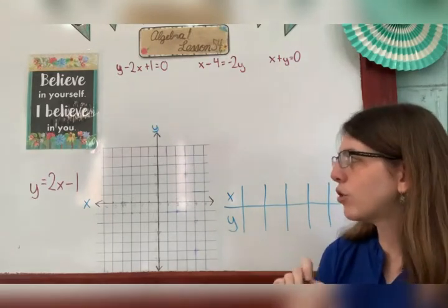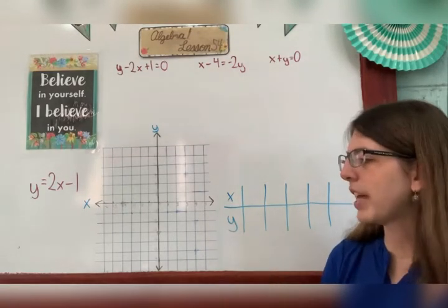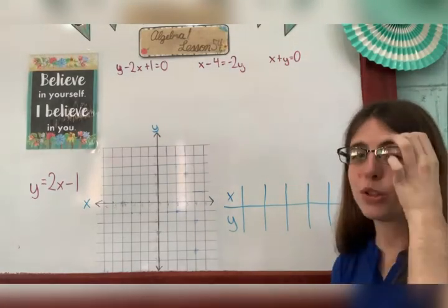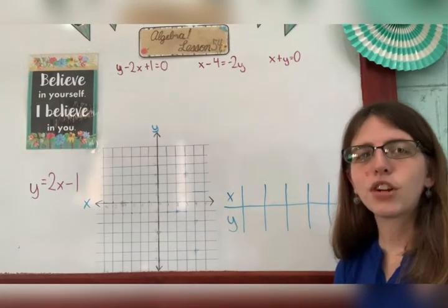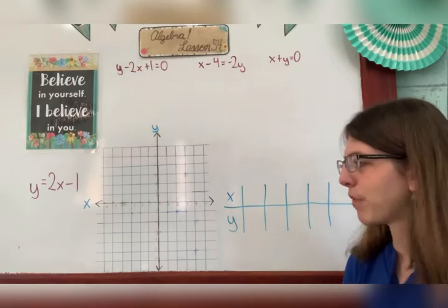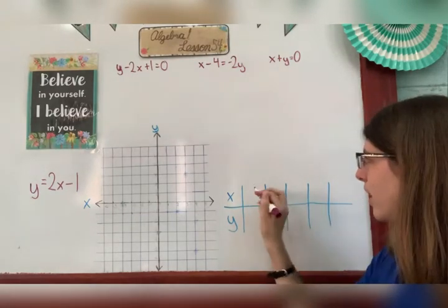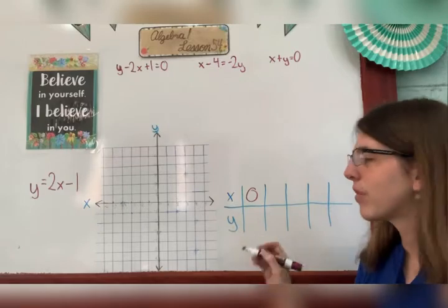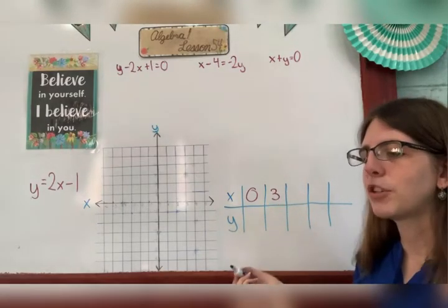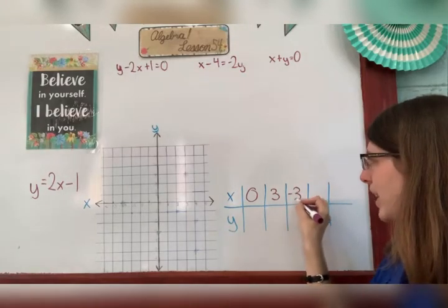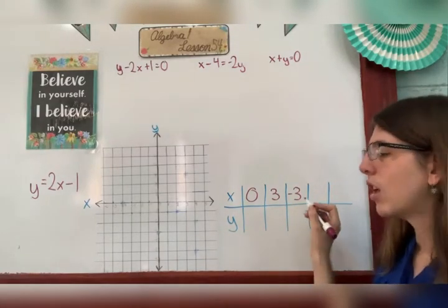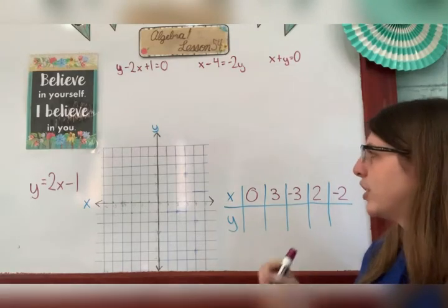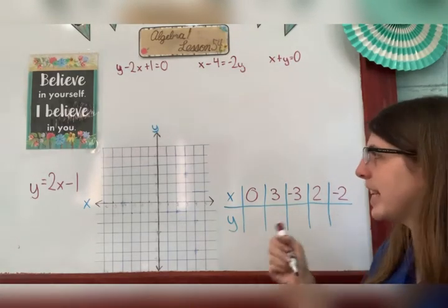So for this one, y equals 2x minus 1. Your book has us doing five pairs. We normally won't do five pairs — we'll normally do three — but for this first example we're going to do five. These are the values the book chose for x: zero (almost always start with zero because it's easy), three (we don't want to use one because it's too close to zero), negative three so we have something on the opposite side, two, and negative two, just to have some extra points.